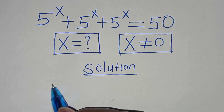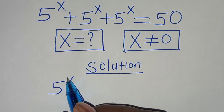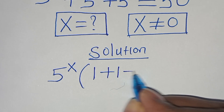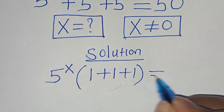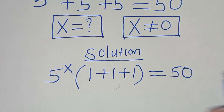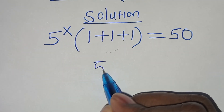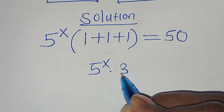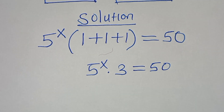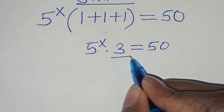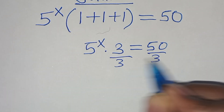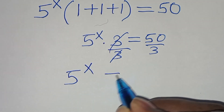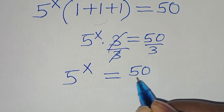Now since 5 to the power of x is common here, we can factor out 5 to the power of x, so that now here we have 1 plus 1 plus 1, this is equal to 50. So here we have 5 to the power of x multiplying by 1 plus 1 plus 1, this is 3, and this is equal to 50. Let's divide both sides by 3, so that now here we have 5 to the power of x, this is equal to 50 over 3.